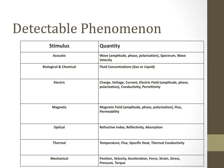There are different types of sensors. Acoustic sensors measure wave spectrum and velocity. Biological and chemical sensors measure fluid concentration, gas, or liquid — if there is excess gas, biological sensors are used. Electric sensors measure charge, voltage, current, electric field, conductivity, and permittivity. Magnetic sensors measure magnetic field, flux, or permeability. Optical sensors find refractive index, reflectivity, or light absorption. Thermal sensors measure temperature, specific heat, or thermal conductivity. Mechanical sensors measure position, velocity, acceleration, force, strain, stress, pressure, and torque.